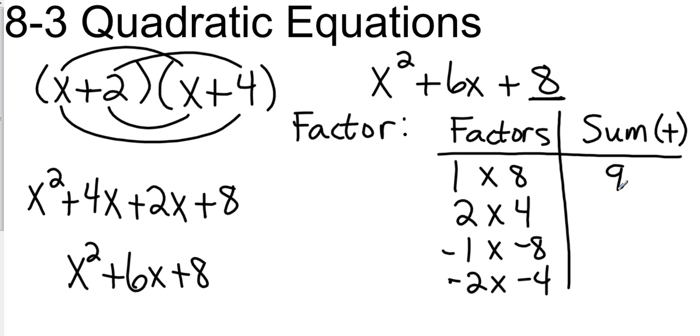So 1 plus 8 is going to be 9. 2 plus 4 is going to be 6. Negative 1 plus negative 8 is going to be negative 9. Negative 2 plus negative 4 is negative 6. Now, tell me on that sum list, which one gives me the middle term of 6. And that's right here.